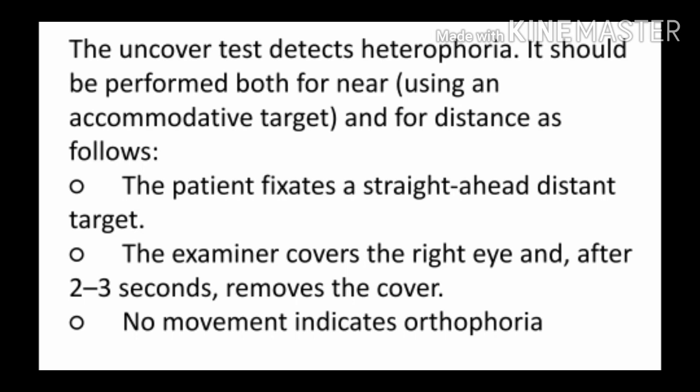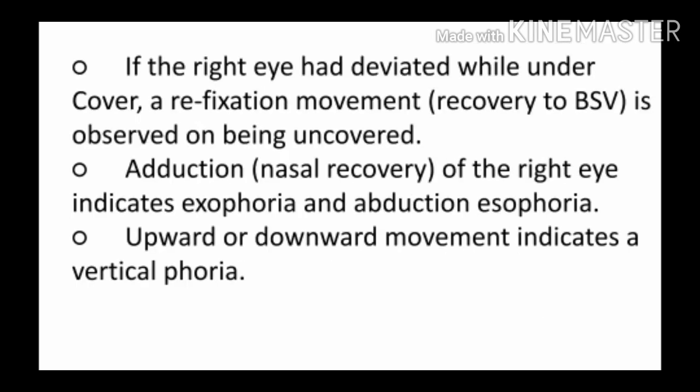The uncover test is done to detect heterophoria — latent squint, which is not visible. Ask the patient to fixate on the target. We can start from either eye; let's start with the right eye. Cover the patient's right eye, then after two to three seconds remove the cover. If the eye shows no movement on removing the cover, this is called orthophoria. If on removing the cover the right eye makes a nasal movement, it means it had deviated temporally under cover and is now returning to its original location — this is exophoria.